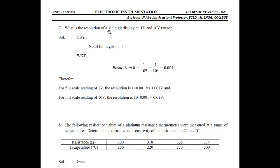The 7th problem: what is the resolution of a 3½ digit digital display on 1-volt and 10-volt ranges? The formula for resolution is R = 1 divided by 10 to the power n, so 1 divided by 10³ equals 0.001. For a full-scale reading of 1 volt, resolution is 1 × 0.001 = 0.001 volts. For a 10-volt range, resolution is 10 × 0.001 = 0.01 volts.